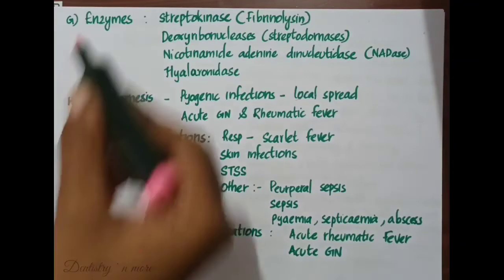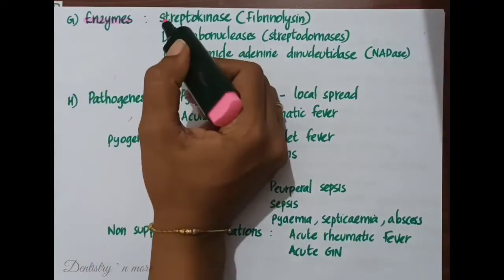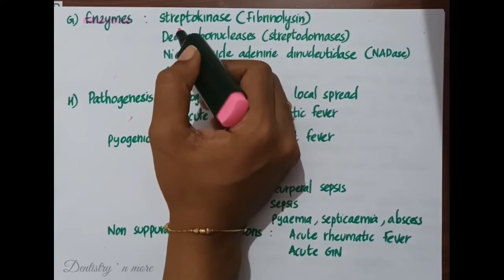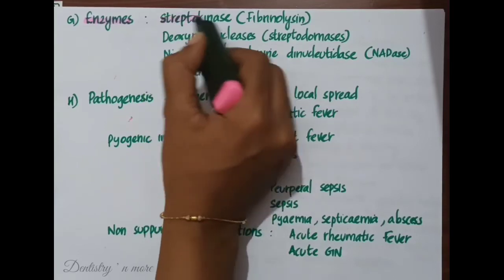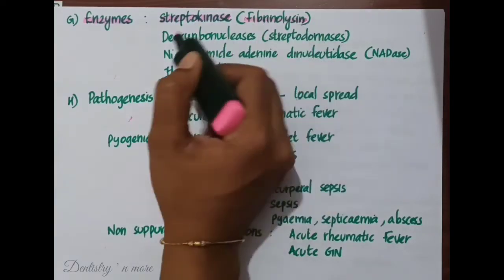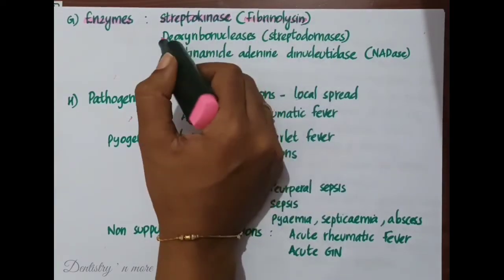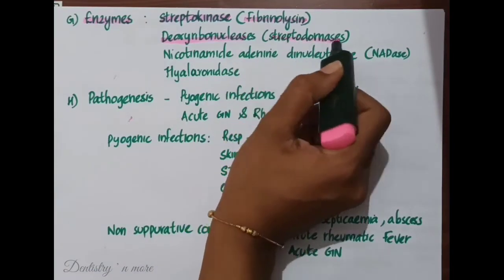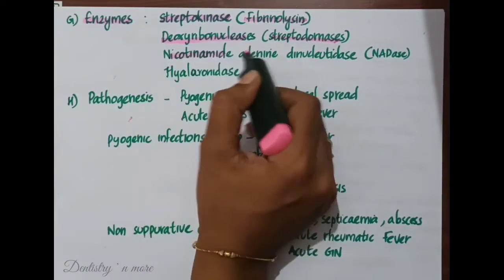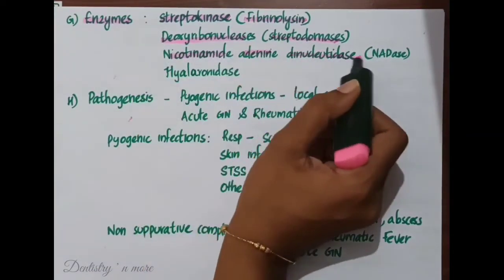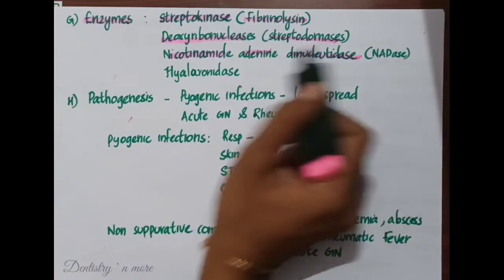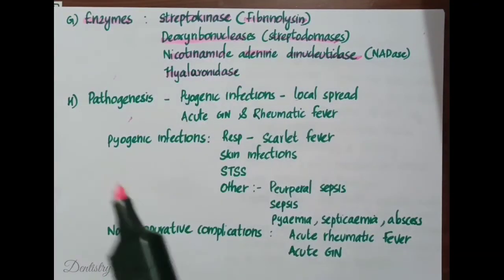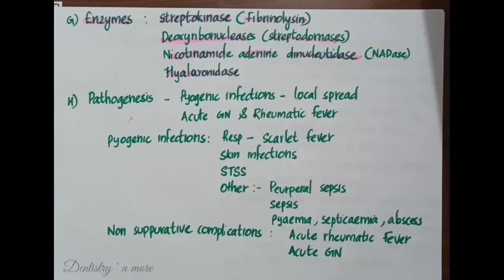The enzymes produced by Streptococcus pyogenes are streptokinase (also called fibrinolysin), deoxyribonucleases (also called streptodornases), nicotinamide adenine dinucleotide, and hyaluronidase.